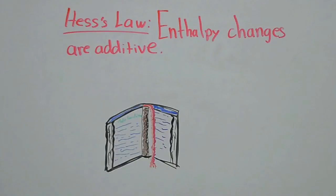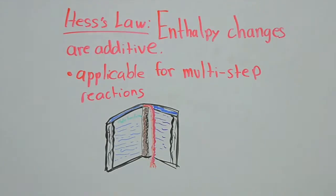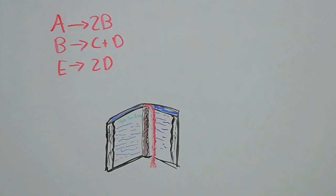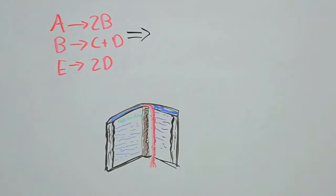Hess's law simply states that enthalpy changes are additive. This is great for multi-step reactions. Take a look at this variable chemical reaction. We have reactants on the left and products on the right. A is made into 2B, B is broken up into C plus D, and E is made into 2D. What we want to calculate is the net reaction of these three steps in their respective order, along with their enthalpies. Our initial step of A to 2B can't be changed since it's our starting point. That reaction takes place, and we will give it enthalpy 1.